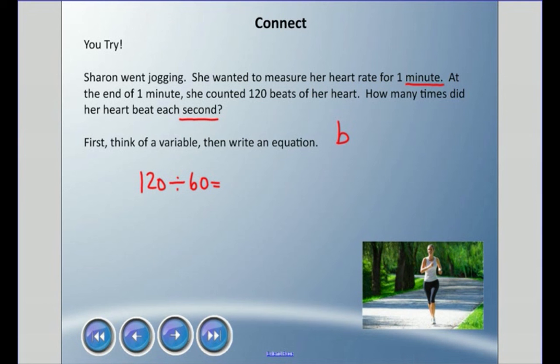We're gonna divide 120 divided by 60. If I don't know that, 60 times B, or 60B, equals 120. That's the other way of writing it. 60 times 2 equals 120, so her heartbeat two times per second. Each second, her heart beat twice, or two times.